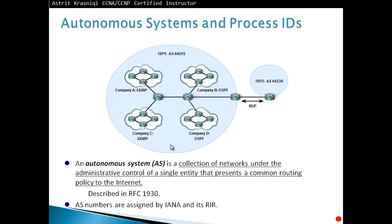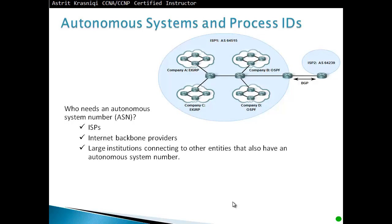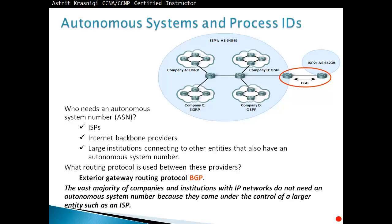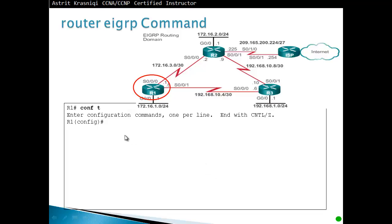There are some private autonomous system numbers, but usually you would purchase them — much like IP addresses. On the internet, your company will be known by its autonomous system number. Who needs an ASN? ISPs, internet backbone providers, and large institutions connecting to other entities. The exterior gateway routing protocol used between those providers is BGP. The vast majority of companies do not need an ASN because they fall under a larger entity such as an ISP.